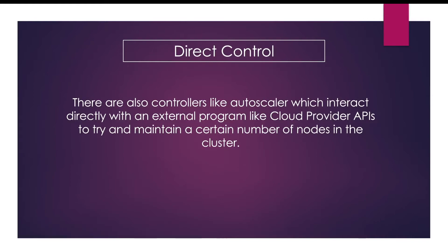There are a few cases where controllers interact with something external to the Kubernetes cluster, for example cloud provider APIs like AWS. Imagine a controller doing auto-scaling — if the number of nodes in the cluster needs to be increased, a custom controller will interact with the AWS API to create a node in order to scale up. This is basically direct control, because the controller is directly accessing a cloud provider API to fulfill that use case.